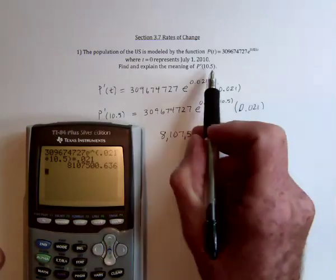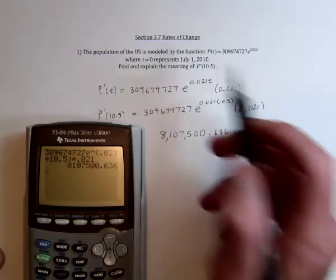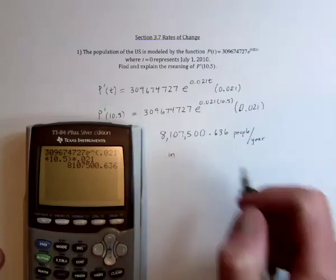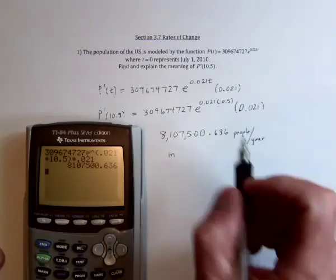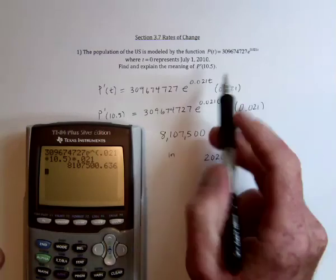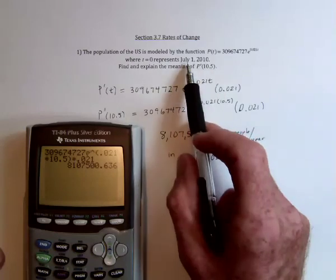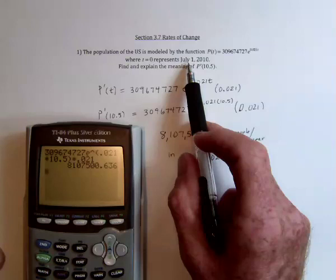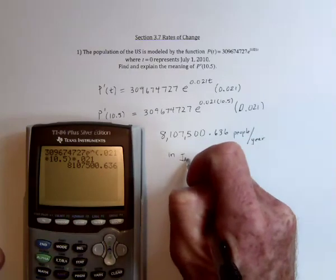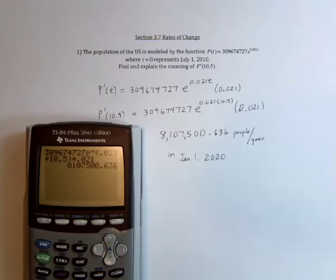And that's 10.5 years after July 1, 2010. So next, what year would that be? Either 10 years later, so 2020. And then half a year later would be, let's see, from July. That's the seventh month. If you add six months to that, it'll take you to January. So Happy New Year in 2020.